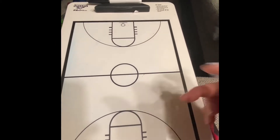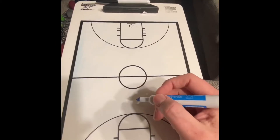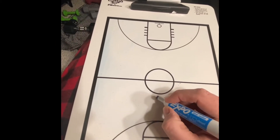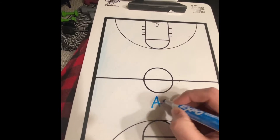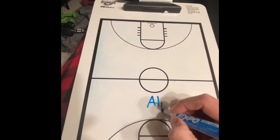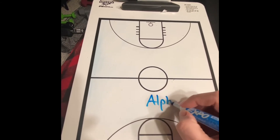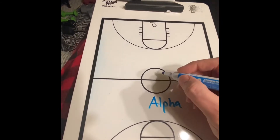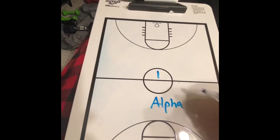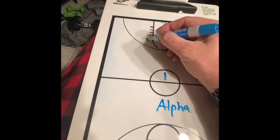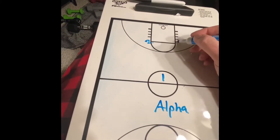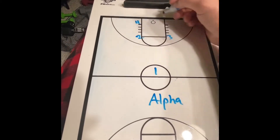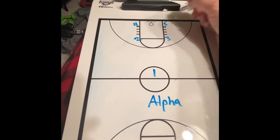The first play is called Play Alpha. On Play Alpha, you have position one, two, three, four, and five.